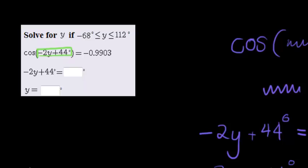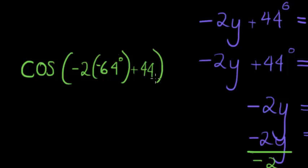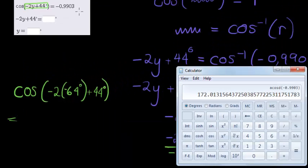Let's try that. Let's actually just test that. Cos of negative 2 times negative 64 degrees plus 44. If I take degrees, if I take that, I should get negative 0.9903. So let's try.